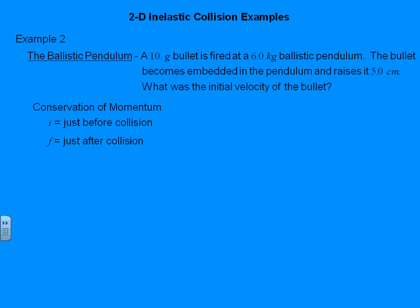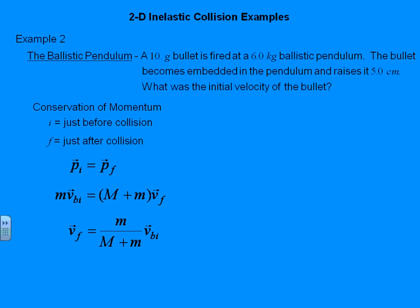The initial momentum and the final momentum must be conserved. Initially, the only thing with momentum is the bullet: mass of the bullet times its initial velocity. Afterwards, the combo has momentum — and since it's a combo, it's the system mass times the final velocity. This becomes a one-dimensional problem because we're looking at just after the collision, before it has had a chance to swing through two dimensions. Solving for the final velocity of the ballistic pendulum and bullet combo gives the ratio of bullet mass to total mass times the initial velocity of the bullet.